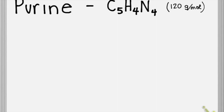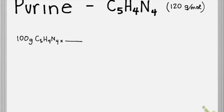We know that our chemical formula is comparing things in terms of moles. So if we were to say we have a 100-gram sample of purine put into our combustion analysis chamber, we can determine how many moles of purine that corresponds to. The molecular weight is written above, from the periodic table for each of the atoms times their subscript. So we have 1 mole of purine for 120 grams, and our grams cancel, leaving us in moles of purine.